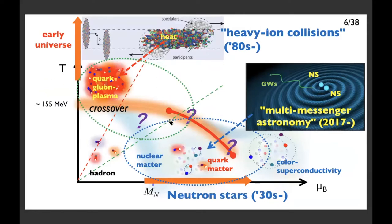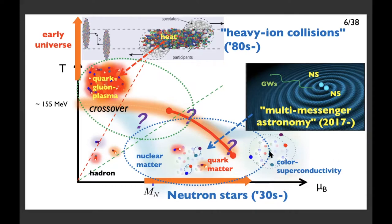In the QCD phase diagram, T is temperature and μ_B is baryon chemical potential — roughly speaking, baryon density. At low temperature and low baryon density, we have hadronic matter. By heating up hadronic matter, it transforms into a quark-gluon plasma through a crossover transition, and this hot matter can be created by relativistic heavy-ion collision — a now-mature field. Another big area of science is found at low temperature and high baryon density, where we have the physics of neutron stars. This field is now rapidly developing, especially after the discovery of gravitational waves from neutron star-neutron star merger in 2017, which opened the new field of multi-messenger astronomy.